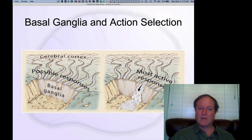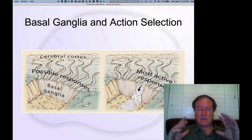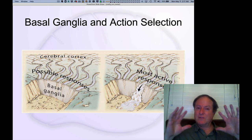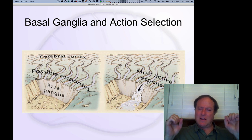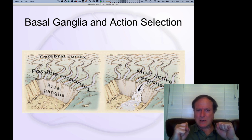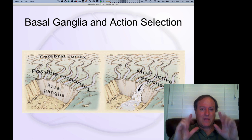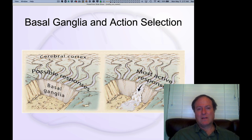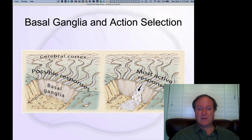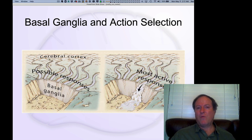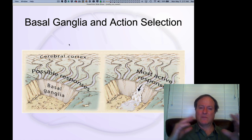Under this model, the cerebral cortex is cerebral — thoughtful, a little in the clouds, dreaming of different possible ideas. The basal ganglia is the hard-headed decision-maker: 'That's not going to work. This is too crazy. That's too risky. We're going to do this.' It's a reward-focused decision-making system that ensures your decisions are consistent with grounded estimates of how well things might actually turn out.